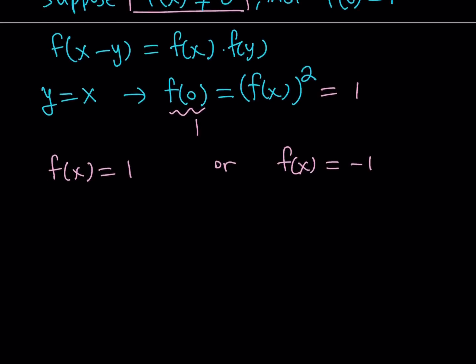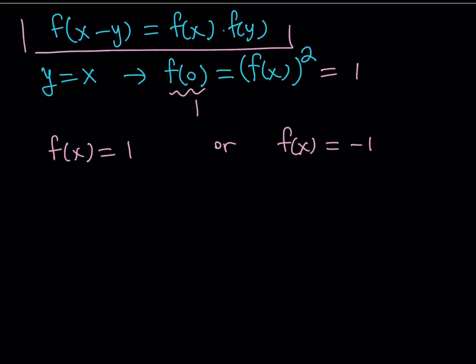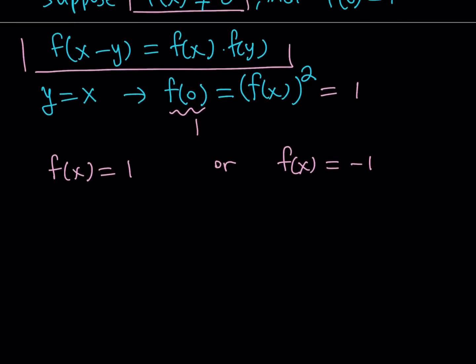Here's the thing: if you go back to the original equation and replace f of x with 1 on both sides you're going to get 1 equals 1 times 1, so this looks good. But if you replace f of x with negative 1, f of x minus y is going to be negative 1 and on the right hand side you're going to have negative 1 times negative 1, but obviously this is not true. Therefore f of x equals negative 1 is not going to be a solution but f of x equals 1 is going to be a solution.